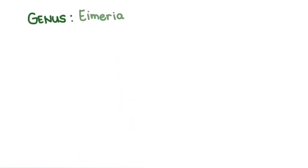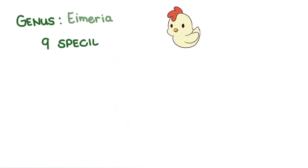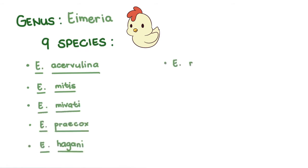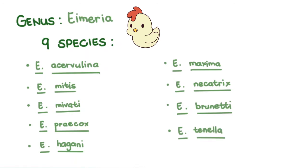There are nine species of Eimeria that parasitize the domestic chicken. These are Eimeria acervulina, Eimeria mitis, Eimeria mivati, Eimeria praecox, Eimeria hagani, Eimeria maxima, Eimeria necatrix, Eimeria brunetti, and Eimeria tenella, each parasitizing a different area of the intestines.